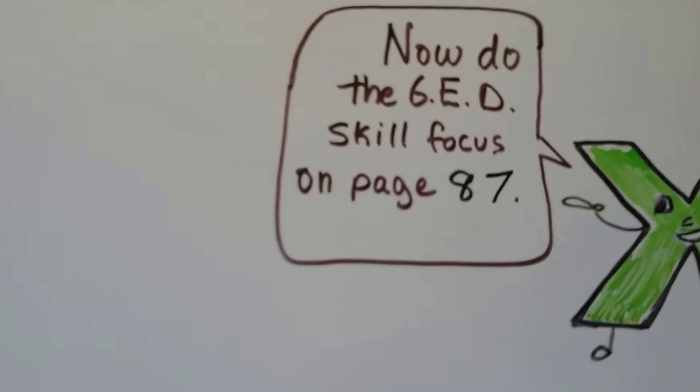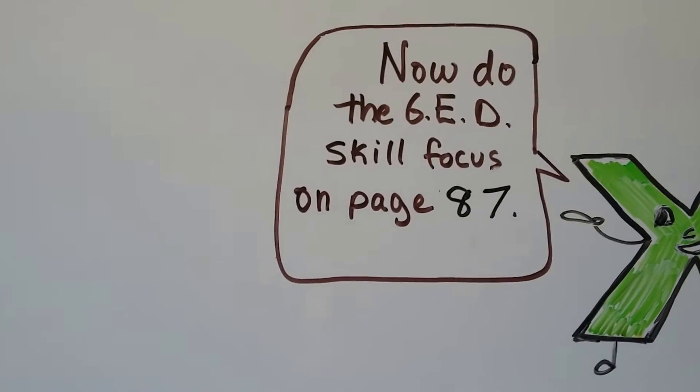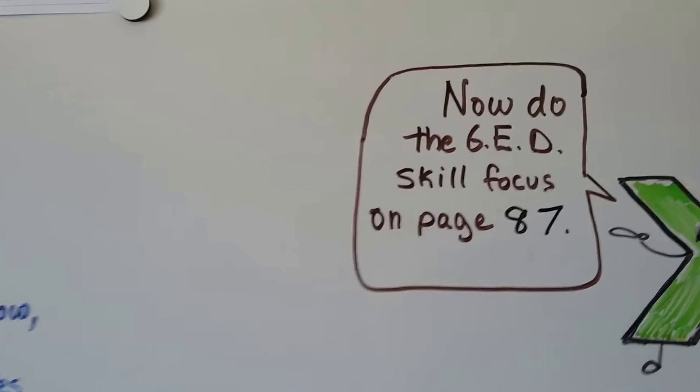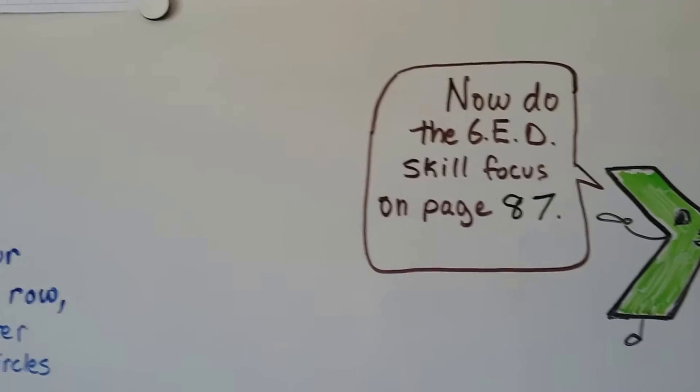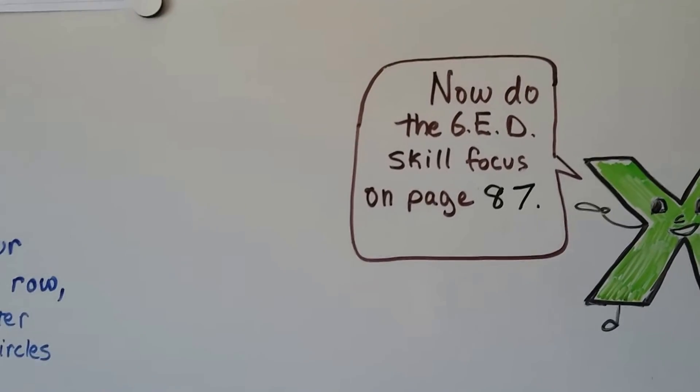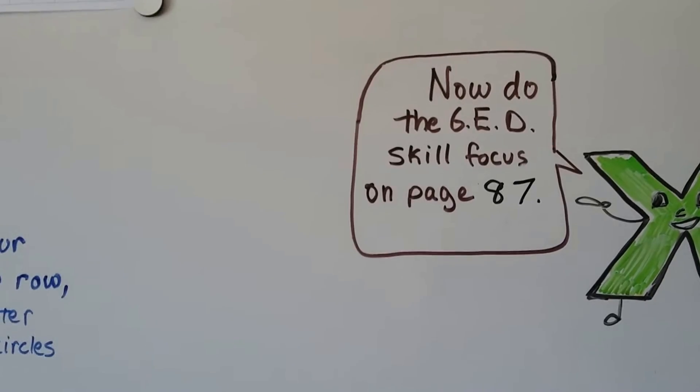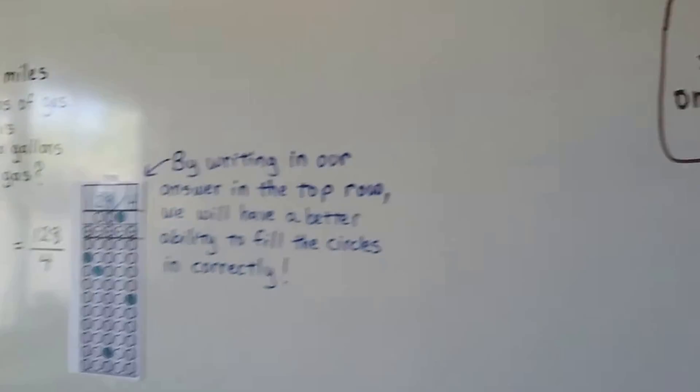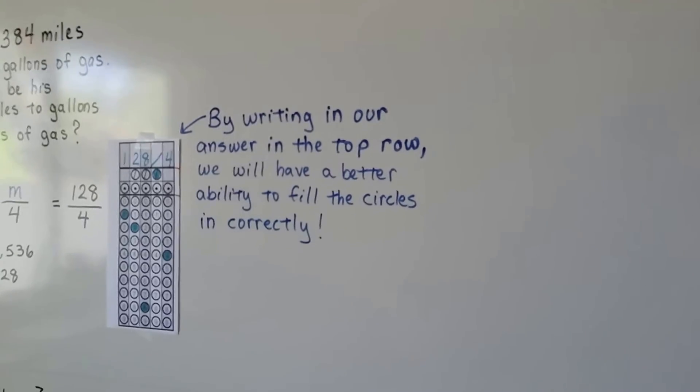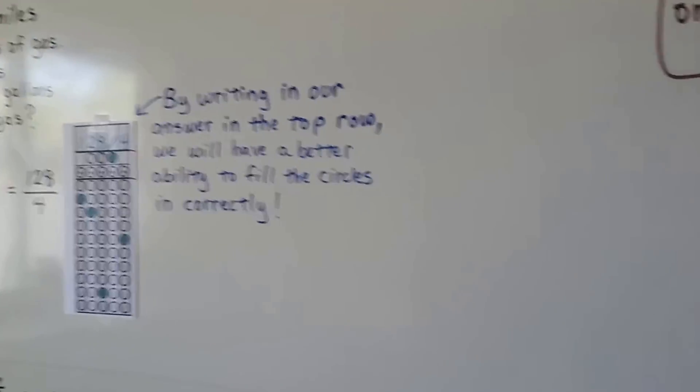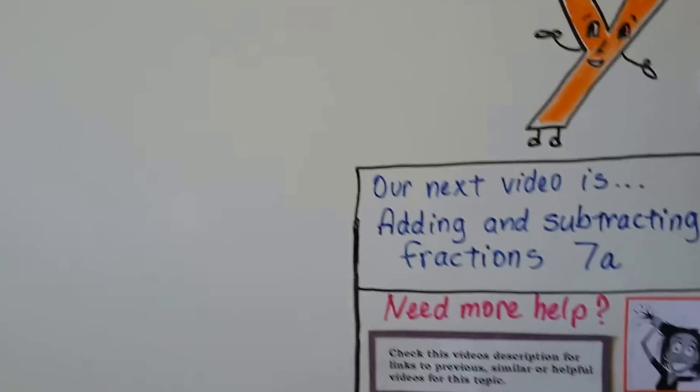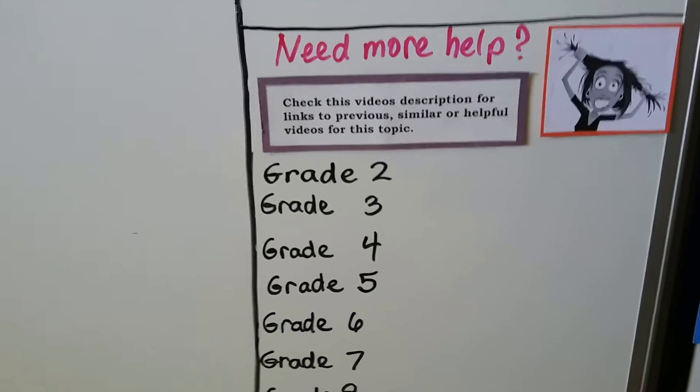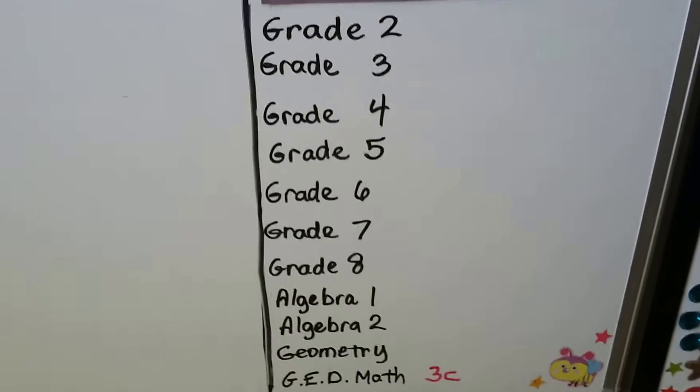You should now be ready to do the skill focus on page 87. If you're lost or confused, watch this video again or watch 3C. It's linked in this description. And watch the proportion video just before this. 6F. You should be following along in the playlist to not miss anything, because you have to do whatever it takes to pass this GED.